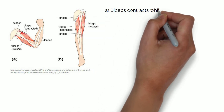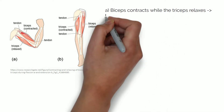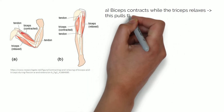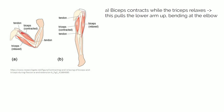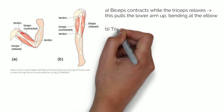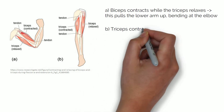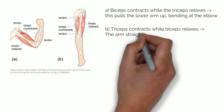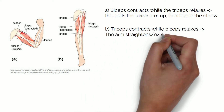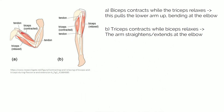When the bicep contracts while the triceps relaxes, this pulls the lower arm up, bending at the elbow. When the triceps contracts and the biceps relax, the arm straightens or extends at the elbow. Muscles act as effectors and are stimulated to contract by neurons in the neuromuscular junction.